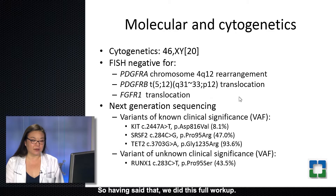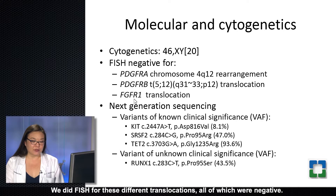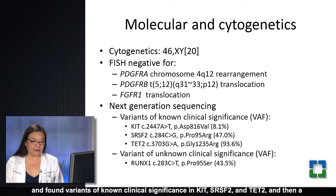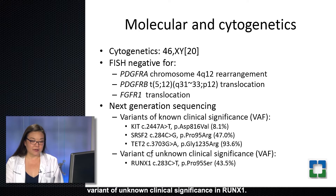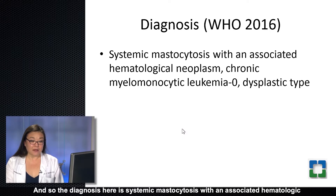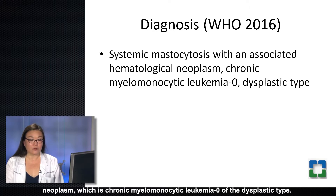Having said that, we did the full workup. The karyotype came back as normal male. We did FISH for the different translocations, all of which were negative. We did next-generation sequencing for genes commonly mutated in myeloid neoplasms and found variants of known clinical significance in KIT, SRSF2, and TET2, and then a variant of unknown clinical significance in RUNX1. The KIT mutation is the typical mutation we associate with mastocytosis. So the diagnosis is systemic mastocytosis with an associated hematologic neoplasm, which is chronic myelomonocytic leukemia-0 of the dysplastic type.